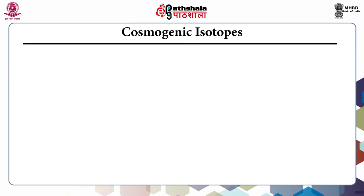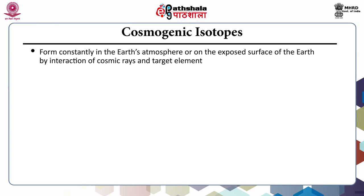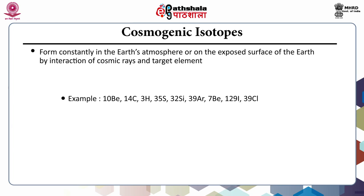Cosmogenic isotopes form constantly in Earth's atmosphere or on the exposed surface of the Earth by interaction of cosmic rays and target elements. Examples include beryllium-10, C-14, tritium, sulfur-35, argon-39, beryllium-7, iodine-129, and chlorine-36.